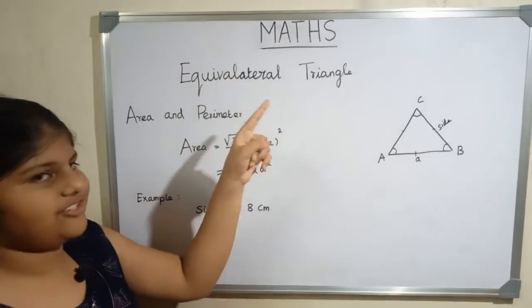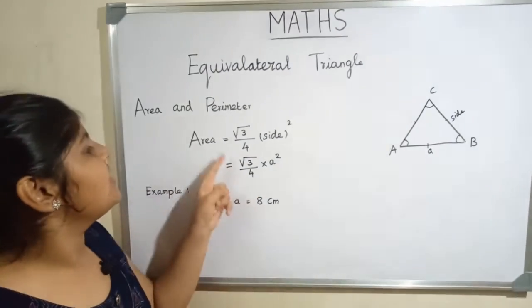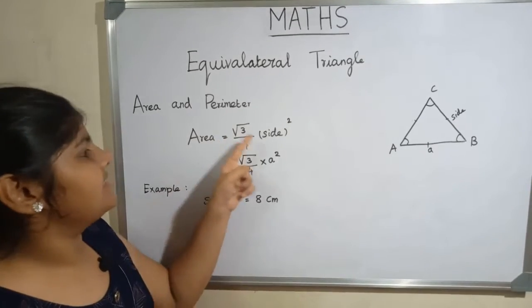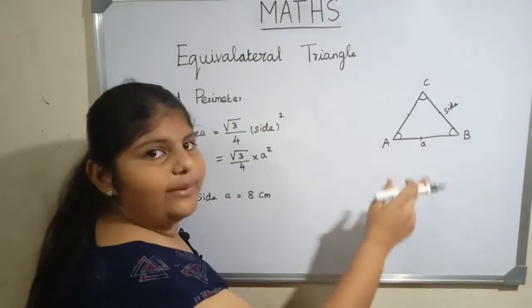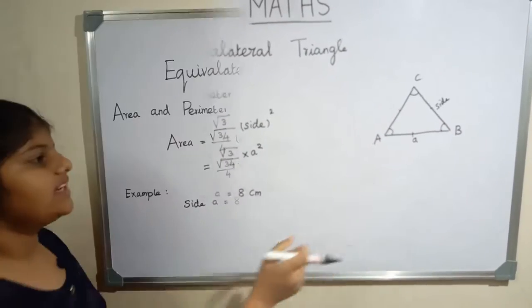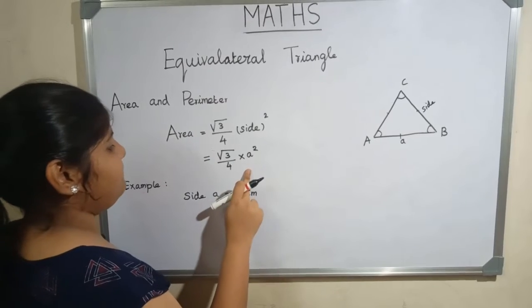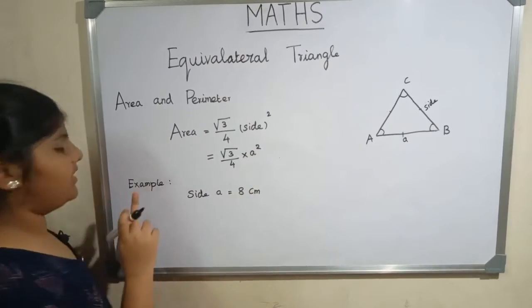The area of an equilateral triangle is root 3 by 4 side square. In an equilateral triangle, all three sides and angles are equal. Here the side is a, so root 3 by 4 multiply a square. Let us see an example: side a is equal to 8 centimeters.